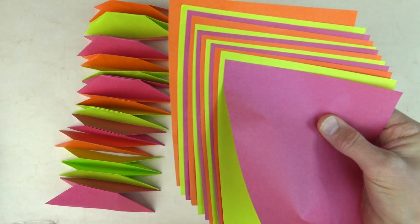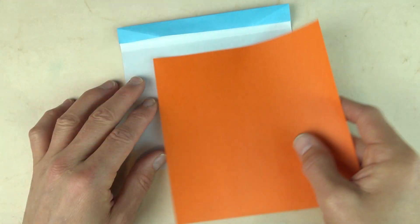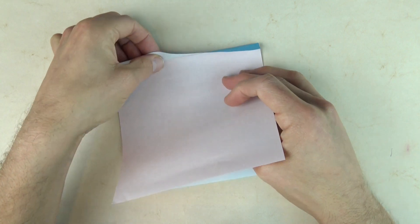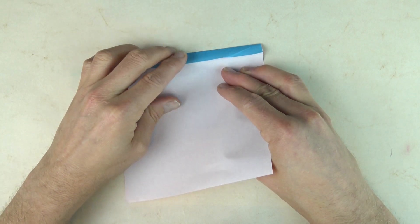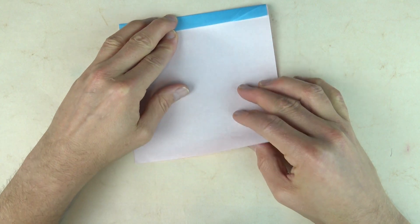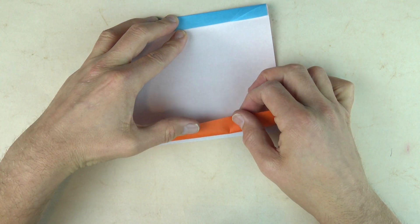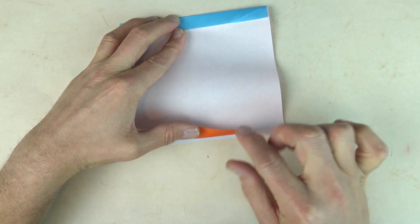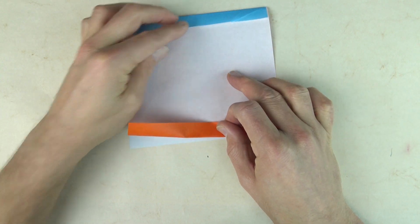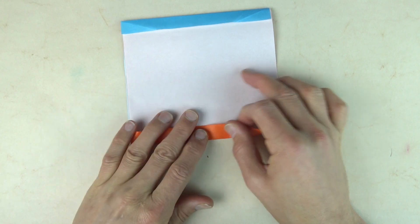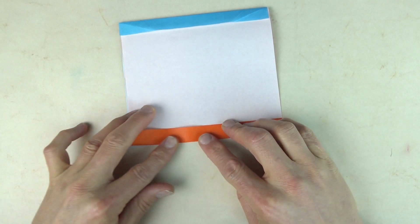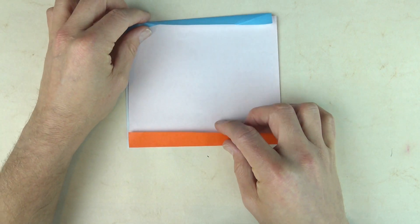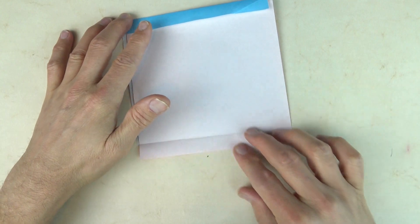Alright, now grab one of your 12 edge squares and turn it over and stick it underneath this flap. Make sure it goes all the way in. And now fold the bottom edge up. And you want to align the fold with this edge. And unfold. And pull it out.